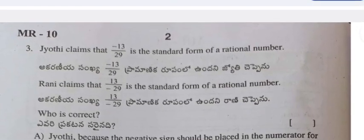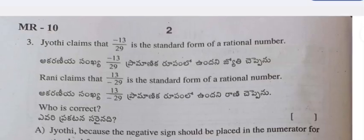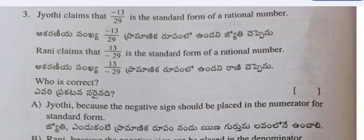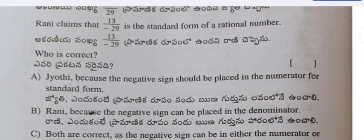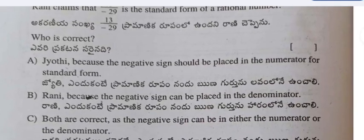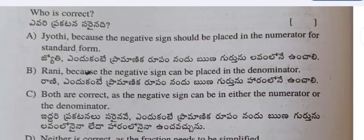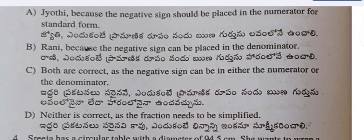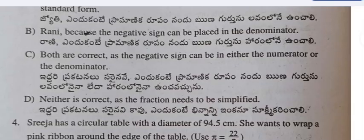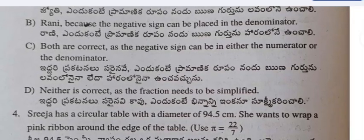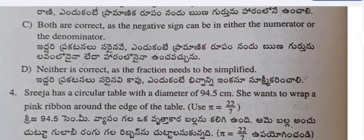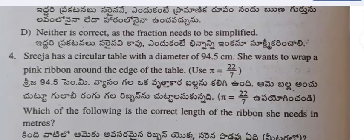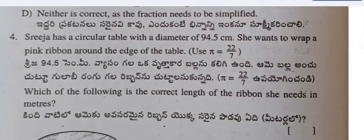Question 3: Jyothi claims that minus 13 by 29 is the standard form of a rational number. Ronnie claims that 13 by minus 29 is the standard form. Who is correct? Options: (A) Jyothi, because the negative sign should be placed in the numerator; (B) Ronnie, because the negative sign can be placed in the denominator; (C) Both are correct; (D) Neither is correct, as the fraction needs to be simplified.